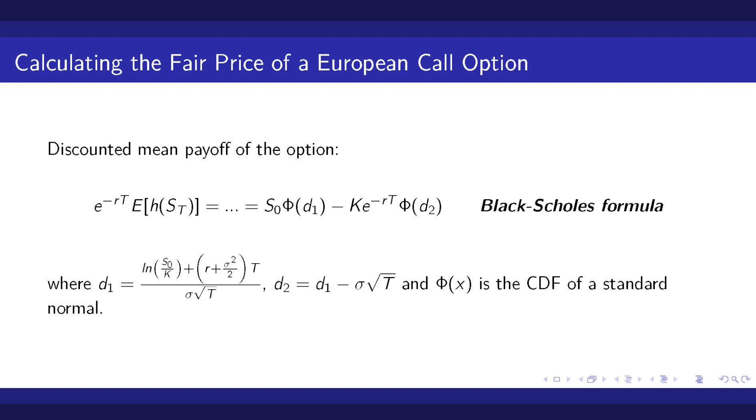Now we are finally ready to calculate the fair price of a European call option. From finance, we know that the fair price of an option should be the discounted mean payoff of the option. The first factor e to the negative r times T is for discounting with the risk-free rate r over a time period of T years. The second factor is the expected value of the payoff under our model where the prices at time T follow a log normal distribution.